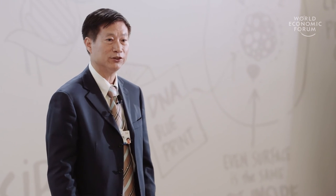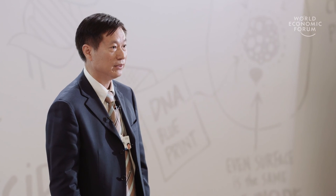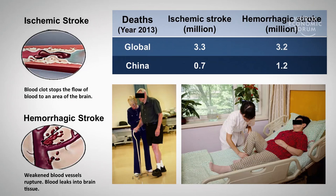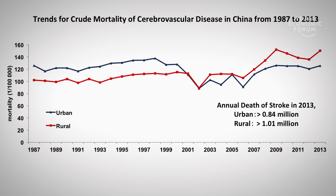Stroke is the third leading cause of death in the world and the first leading cause of death in China. 6.5 million stroke deaths occur annually worldwide. Stroke is a major health problem causing huge economic burdens globally. Although age-standardized mortality and fatality of stroke have reduced, the absolute number of stroke deaths and crude mortality rate still increased in the past 10 years, especially in rural areas.